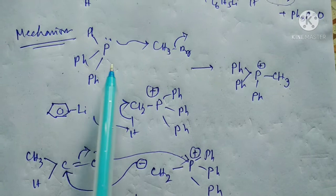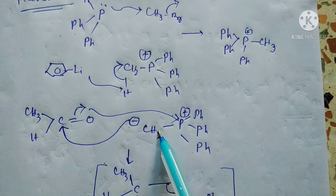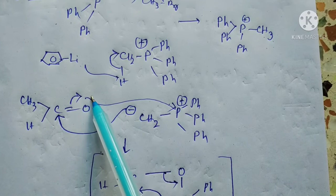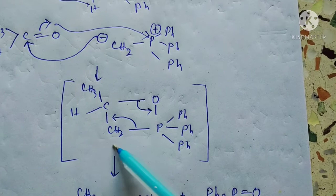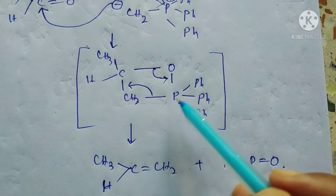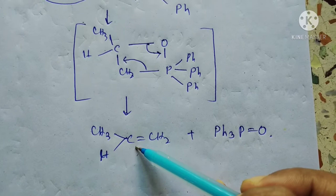The carbanion forms, then attacks the carbonyl carbon to form O-. This attaches to P+, forming an intermediate triphenyl phosphorane compound. This resolves to form the alkene and triphenyl phosphine oxide.